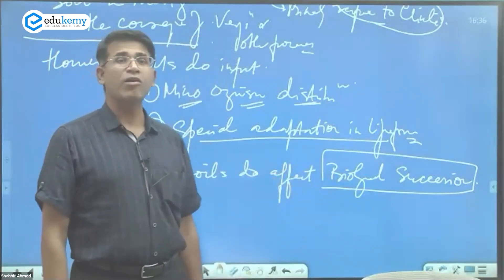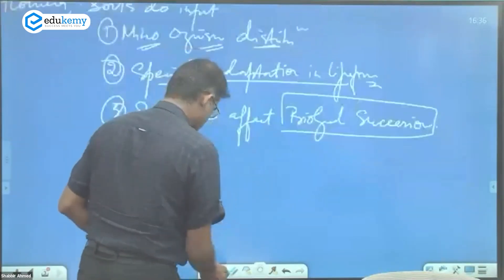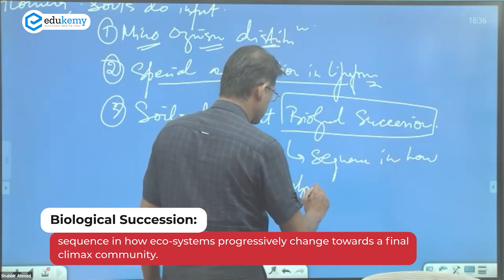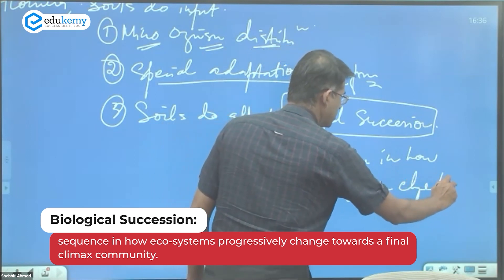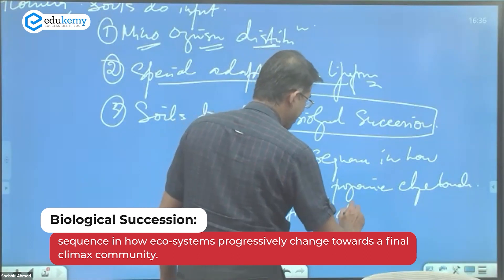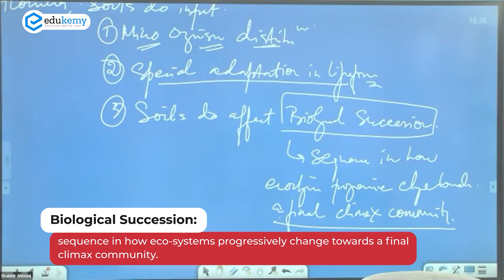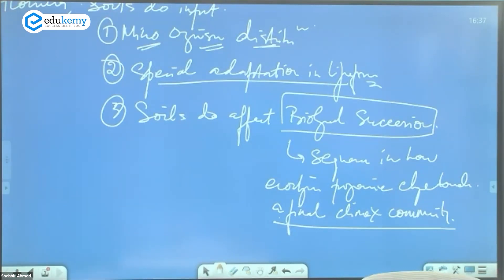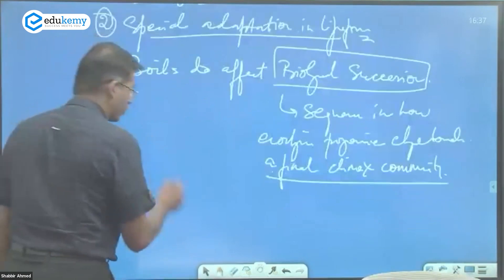Biological succession is the sequence in how ecosystems progressively change and keep modifying towards a final climax community. Soils do affect biological succession in this way.